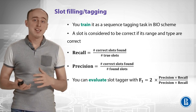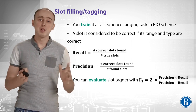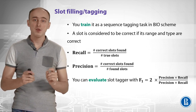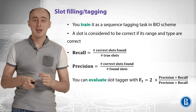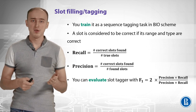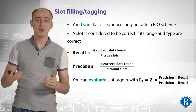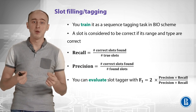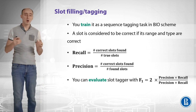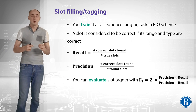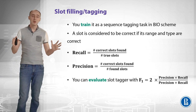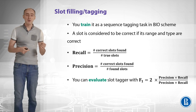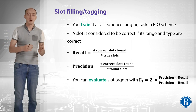You train it as a sequence tagging task in BIO-scheme — we overviewed that in the sequence-to-sequence week. A slot is considered correct if its range and type are correct. We can calculate recall by taking all true slots and finding which are correctly found by our system, and precision by taking all found slots and finding which are correctly classified. You can evaluate your slot tagger with F1 measure, which is the harmonic mean of precision and recall.